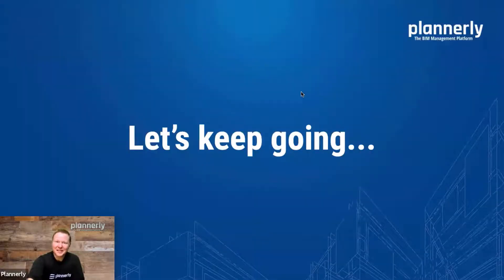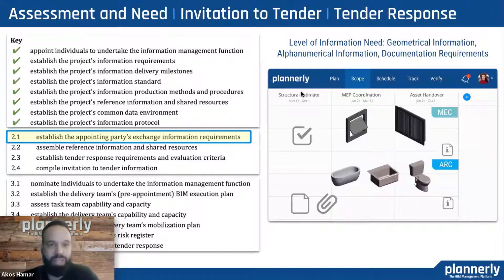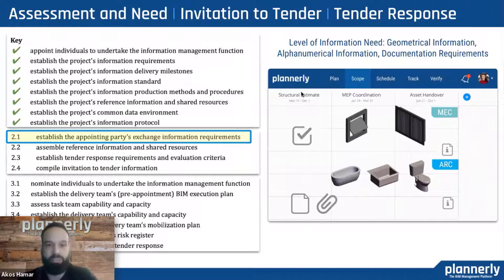We're only one step in and there's a lot that we've already covered. Please bear with us, let's keep going. So now we are stepping from assessment and need to the invitation to tender phase in the process. The first step would be to establish the appointing party's exchange information requirements. After the first assessment and need phase, we understand the generic needs and purposes of what information is needed and how it's going to be used. Now we can go into project-specific details.